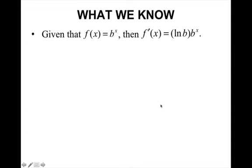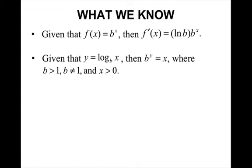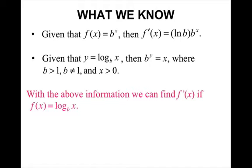So what we currently know: if f of x equals b to the x, then the derivative is the natural log of the base b times b to the x. We also know that when you have y equals log base b of x, you can rewrite it as b to the y equals x, where b has to be greater than 1 and cannot equal 1, and x has to be a positive value, not equal to zero.